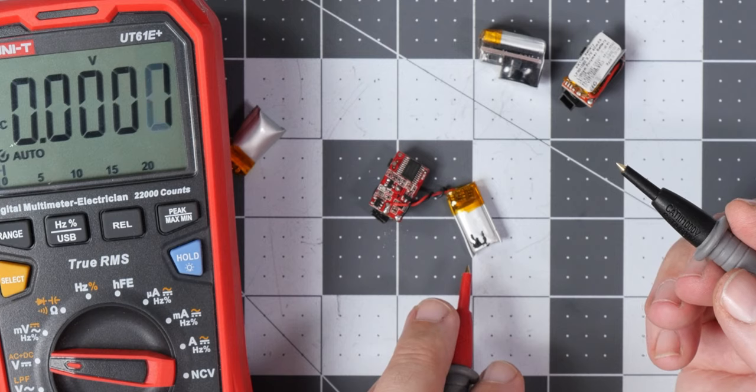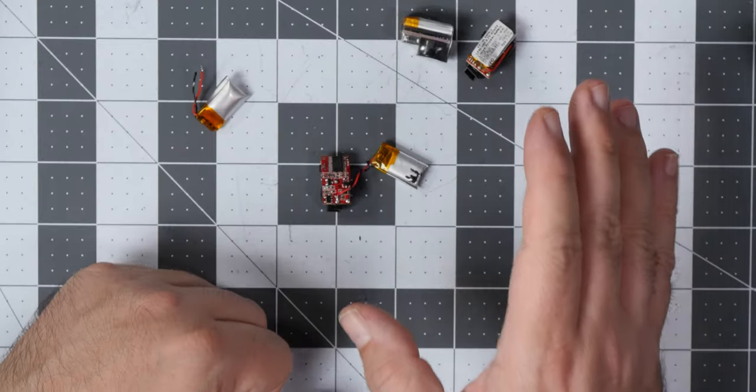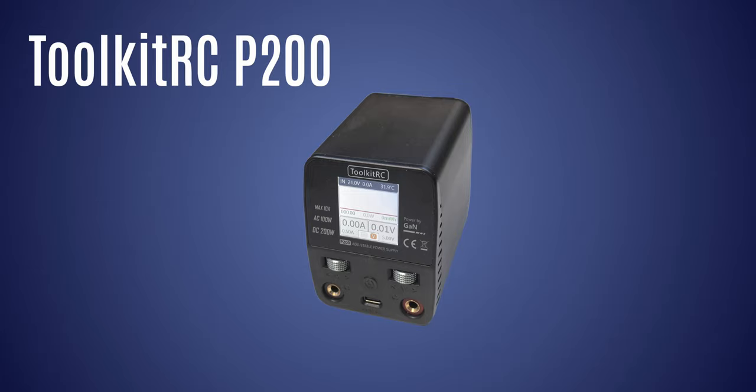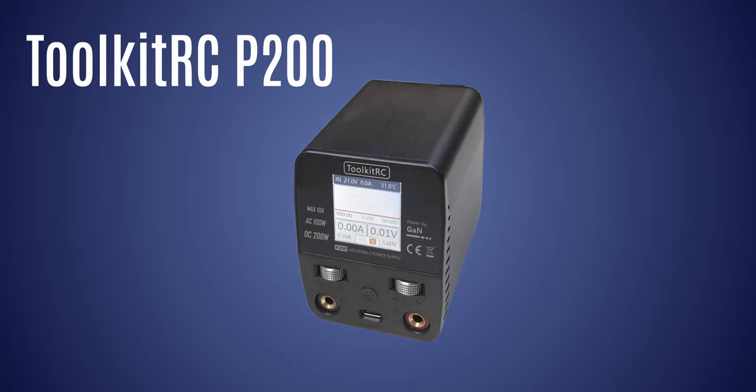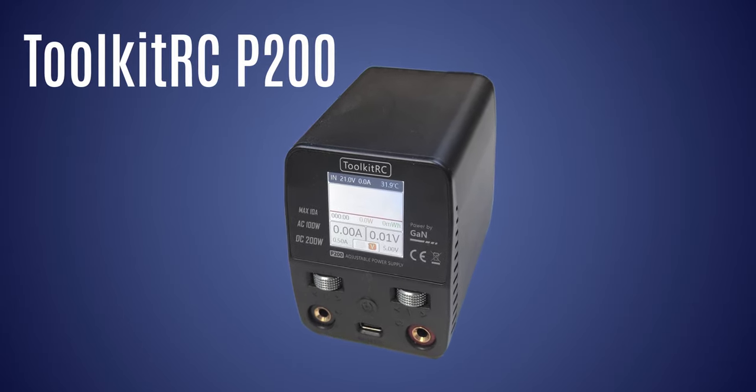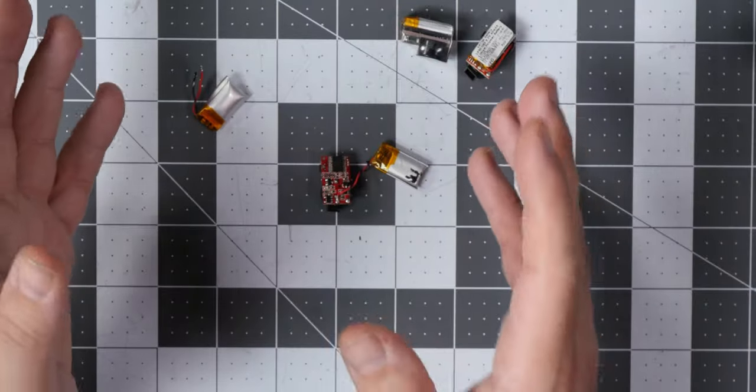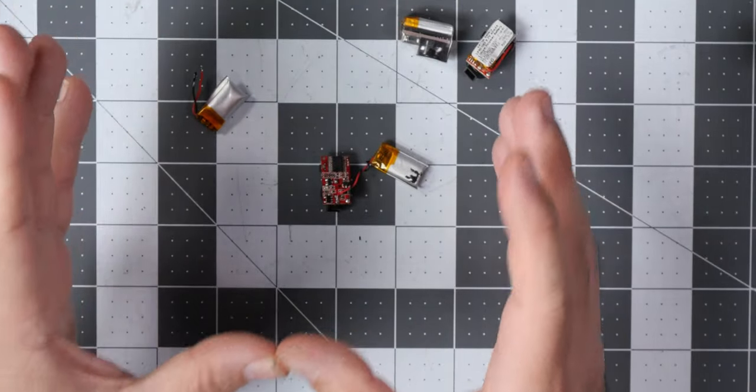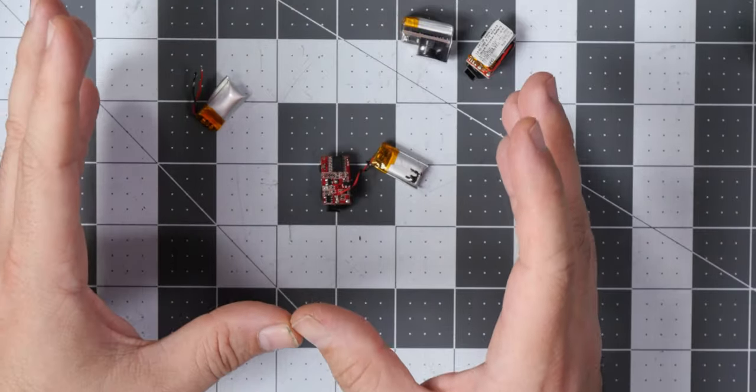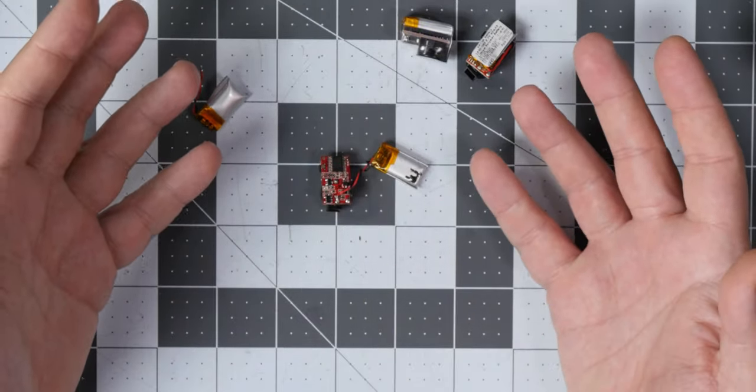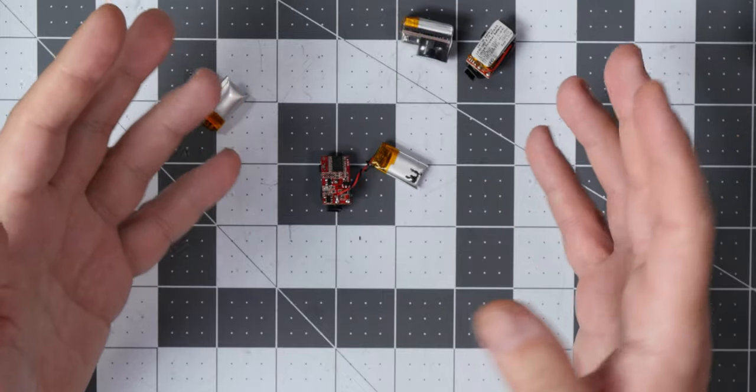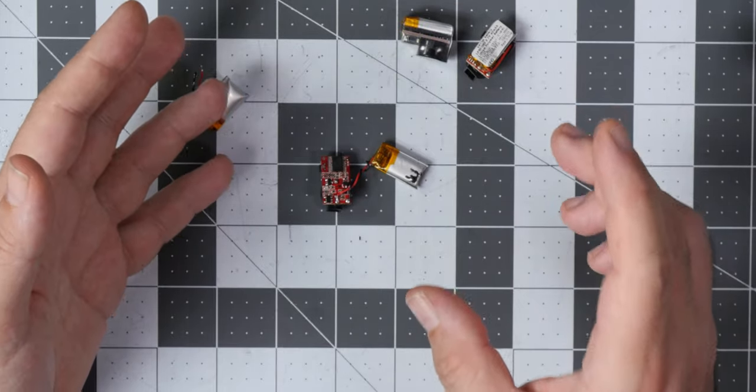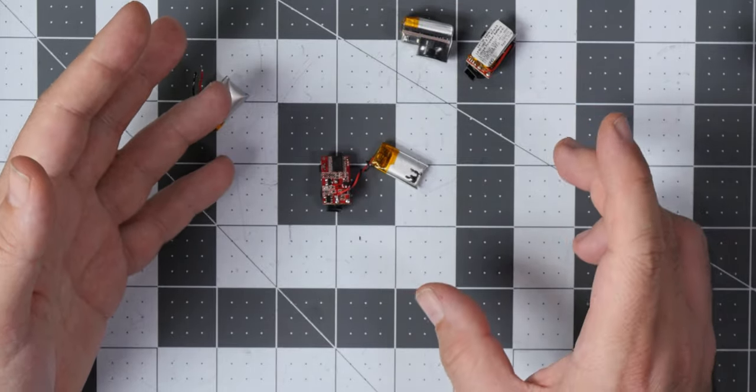You will only need a voltage source, nicely stabilized voltage source. I will be using Toolkit-RC P200 workbench power source, but you can use basically anything. You only have to be capable of precisely setting the voltage. Worst case scenario, if you do not have workbench power supply, you can just use one S-Lipo that is in the storage mode.